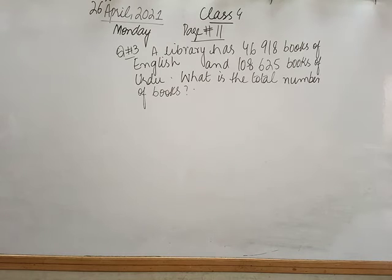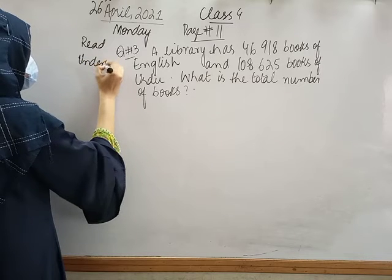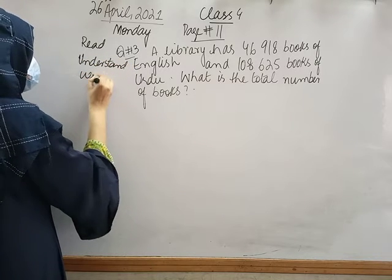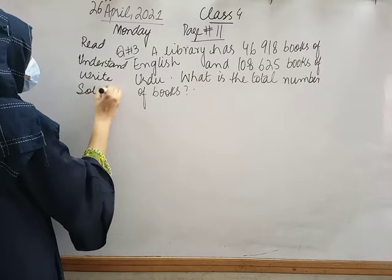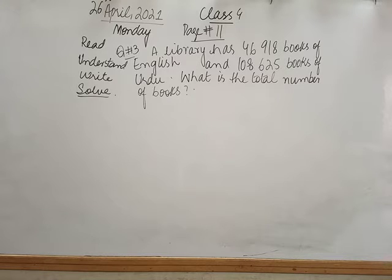Now according to the instructions of word problem, the first instruction is to read, second is to understand, then write, and then solve. So what is the total number of books? I am going to read. The statement is: a library has 46,918 books of English and 108,625 books of Urdu. In the end we have to find what is the total number of books.